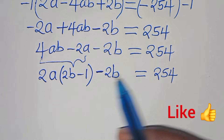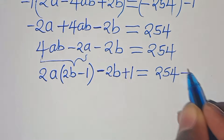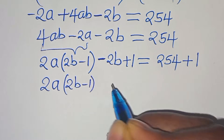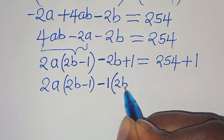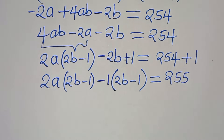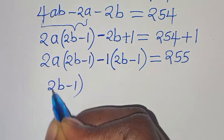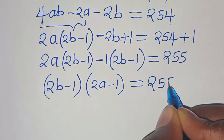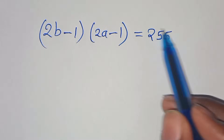We need to make this side the same as (2b minus 1), so we add 1 on both sides. We get 2a(2b minus 1) minus 1 times (2b minus 1) equals 255. Factoring out (2b minus 1) gives us (2b minus 1)(2a minus 1) equals 255.